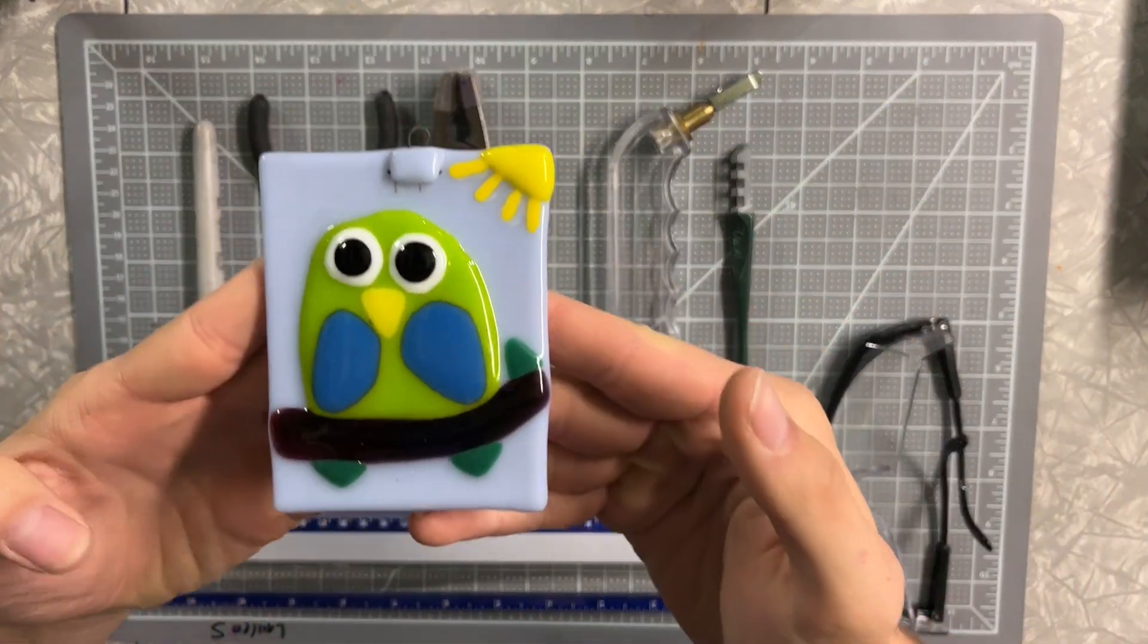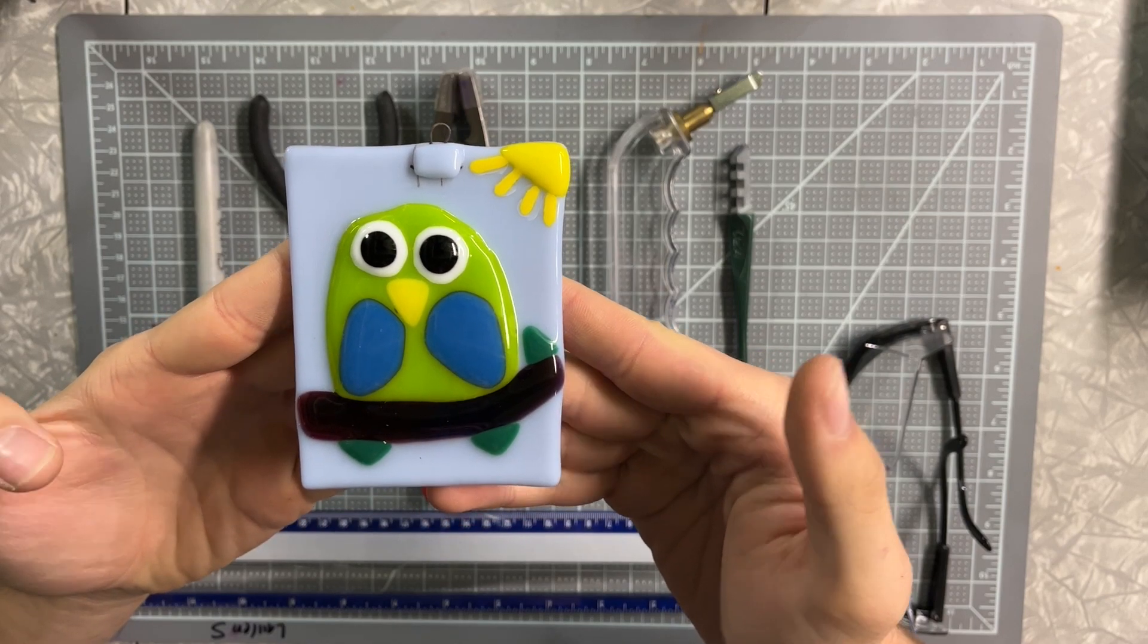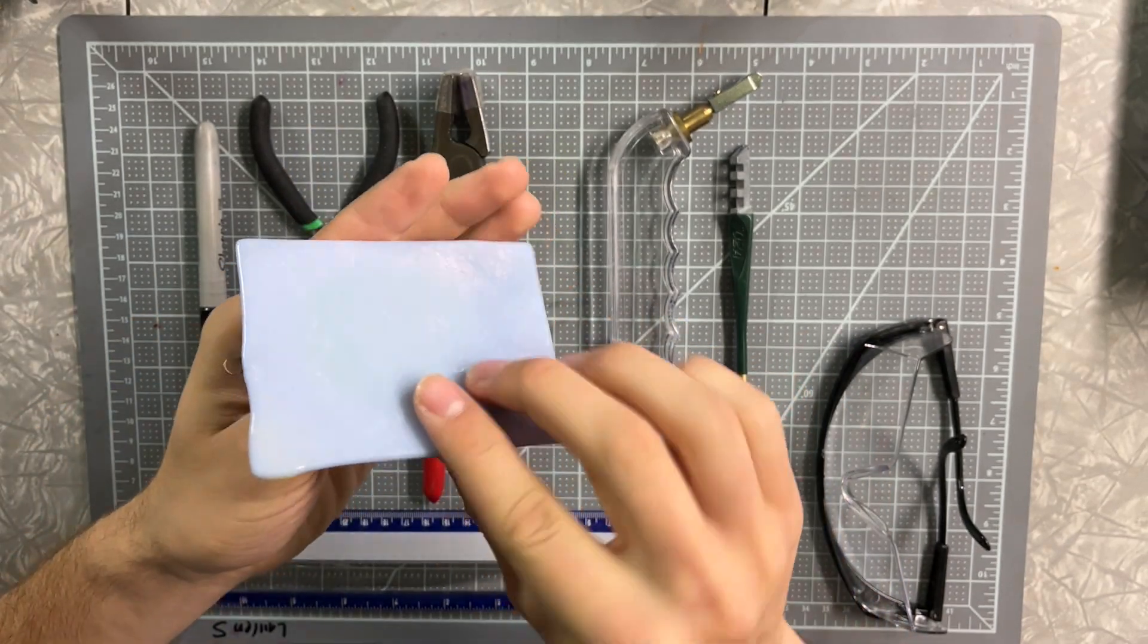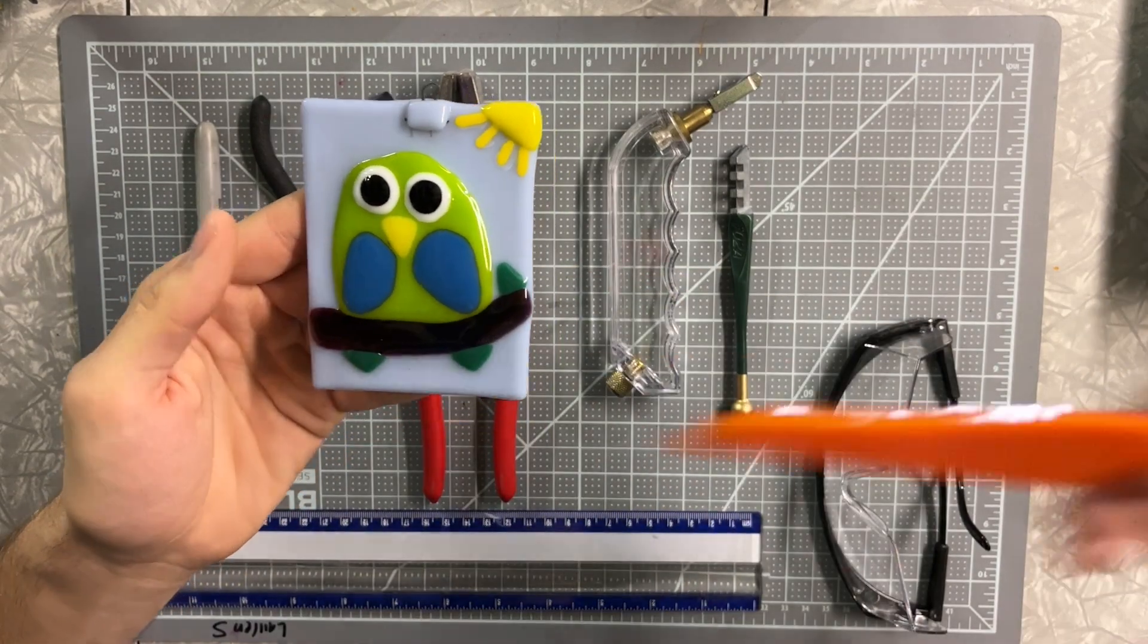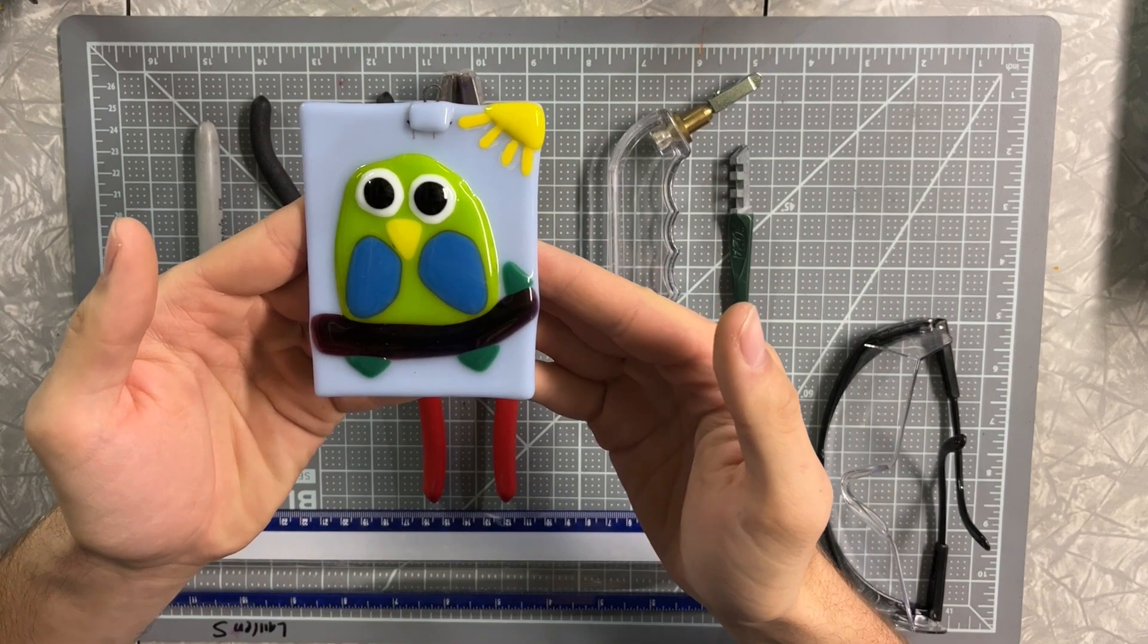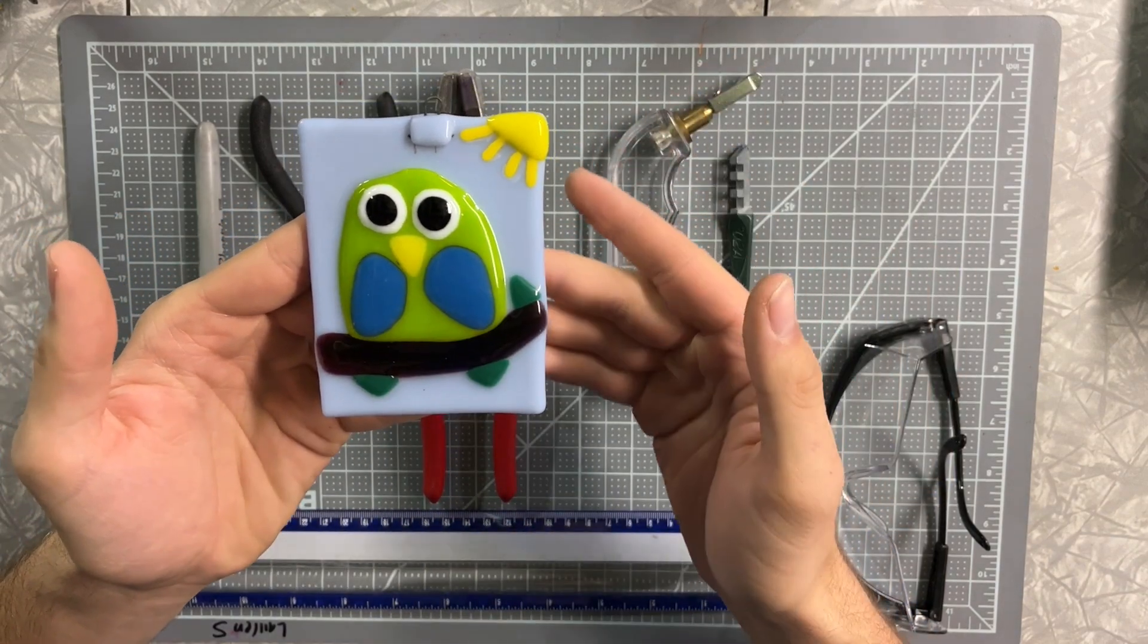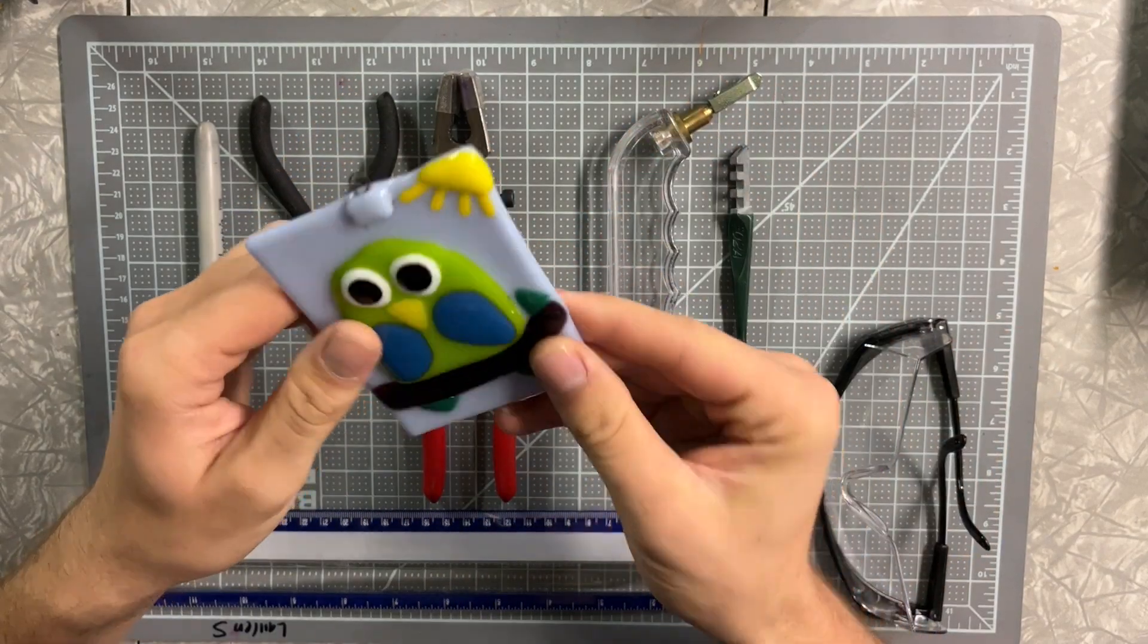This is an example that a student made, it's a bird, and they used sheet glass like this to cut various shapes such as triangles, circles, and ovals, and then assembled them onto one piece of sheet glass.